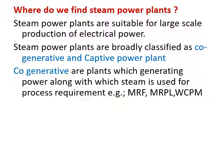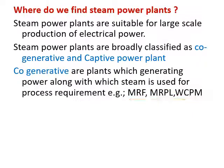Examples of co-generative plants include MRF, MRPL, and West Coast Paper Mill. MRF uses steam for tire preparation during the manufacturing process. MRPL has a distillation unit and wants steam as well as producing power. West Coast Paper Mill in Dandeli produces steam for different process units — such as bleaching and chlorine plants — to make paper, and also produces power. That makes it a co-generative power plant.